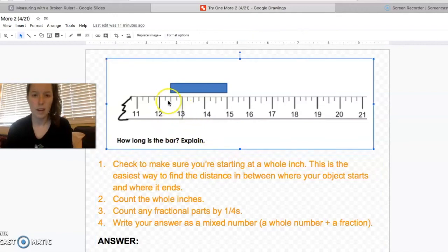So we need to check to make sure we're starting at a whole inch. Wait a minute. Uh-oh. I'm not starting at a whole inch. I'm starting in between two whole inches. What do I do? Well, lucky for us, this blue bar ends at 15, which is a whole inch. Whew. Thank goodness. Okay. So now what I can do is I can count the jumps backwards. Are you ready to count the whole inches with me? Here we go. One, two. Oop. Can't go all the way back to 12. It doesn't reach. So two whole inches.